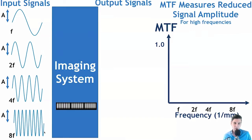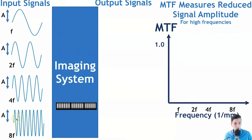The modulation transfer function (MTF), which we have talked about before, uses a bar representation of an oscillating signal going from bright to dark. This is like a 1D signal — if you draw a line through it, you get an oscillating waveform. We want to refresh that concept because it is also relevant to the detective quantum efficiency.